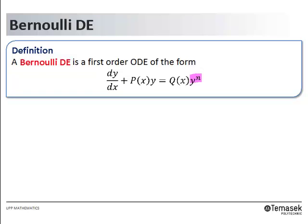The Bernoulli DE is similar to linear DE except for the factor of y to the n on the right-hand side.